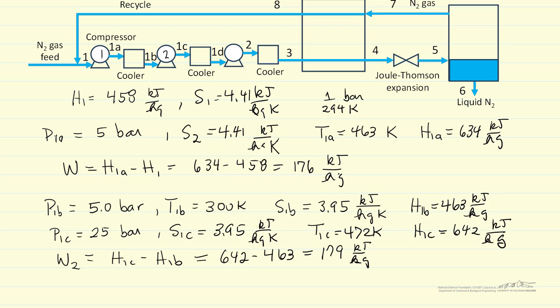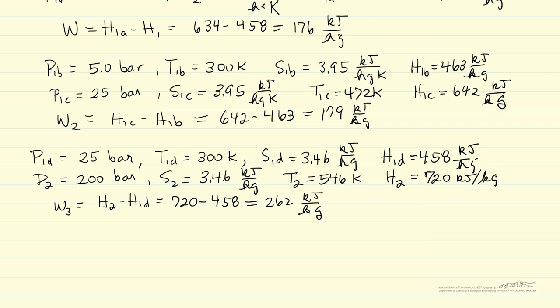Similar value for work for the second one. I won't go through the details for the third one, the exact same type of calculations. Going to the higher pressure, bigger pressure ratio for the third one, then the temperature is significantly higher, and therefore more work is required. So the total work to get to 200 bar is 176 plus 179 plus 262, some 617 kilojoules per kilogram.